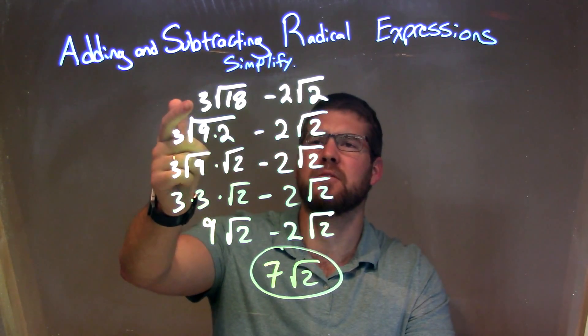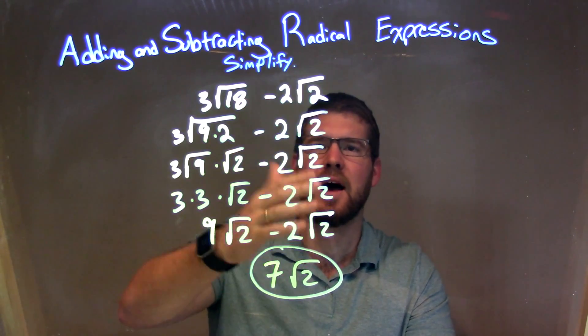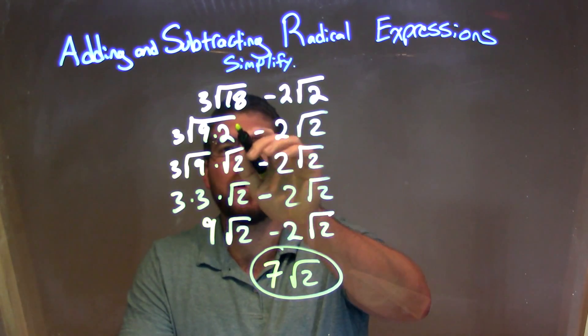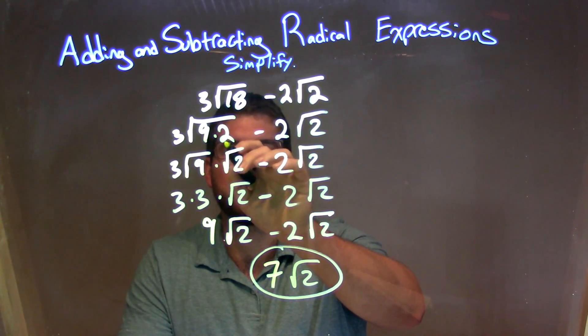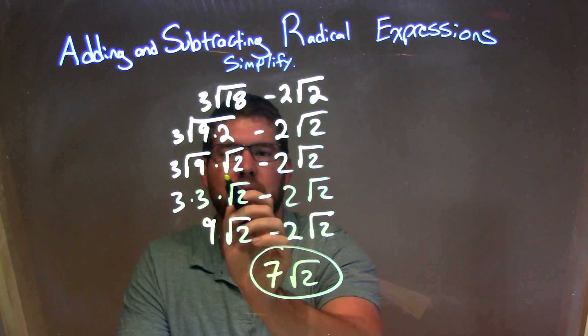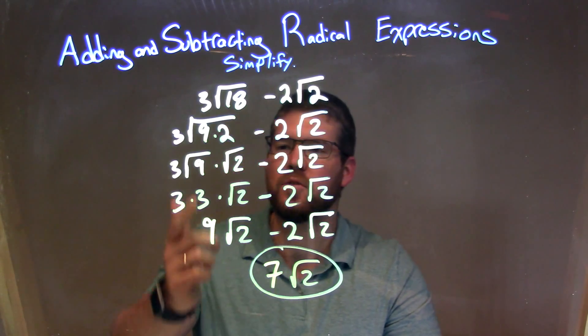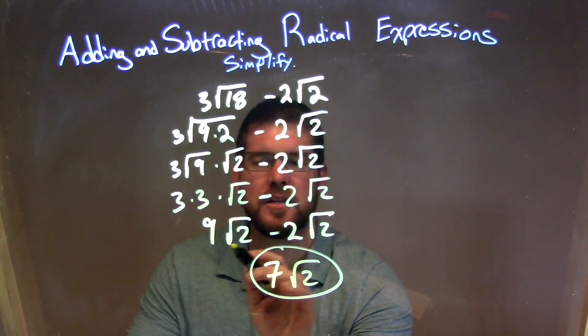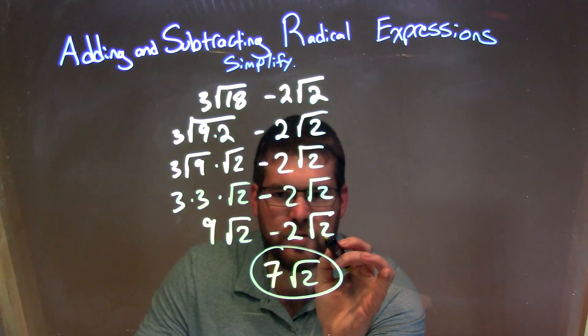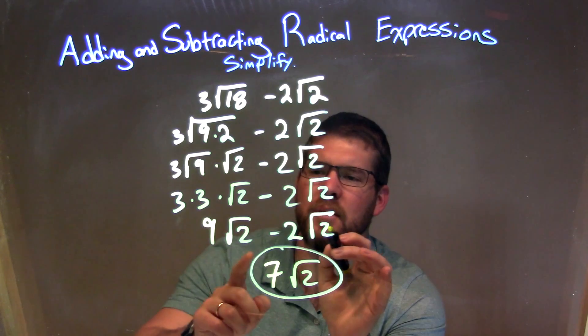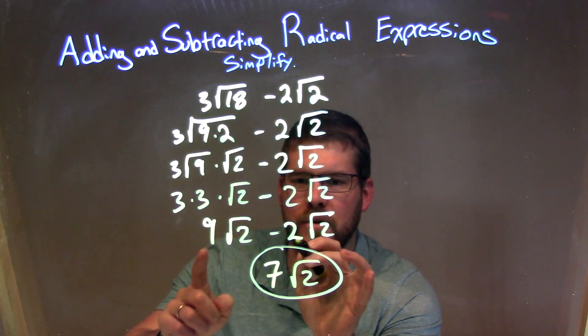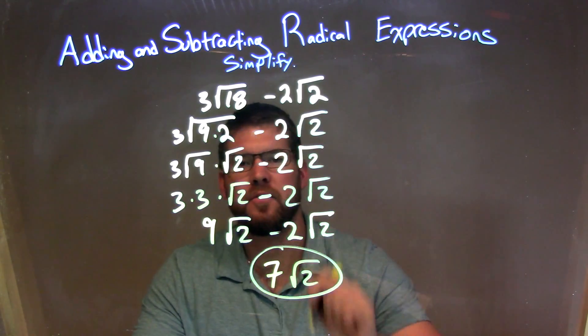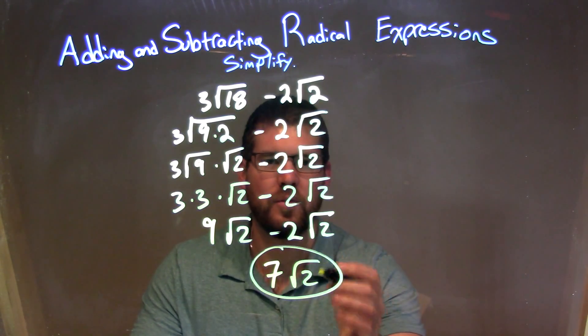So let's recap. We're given 3 square root of 18 minus 2 square root of 2. I can only combine these if I can break them down to be the same square root. So the square root of 18 I break down to be the square root of 9 times 2, and then I can separate that to two different square roots, the square root of 9 and the square root of 2. The square root of 9 simplifies to be 3, and 3 times 3 is just a 9. So now we have 9 square root of 2 minus 2 square root of 2. We can combine these because they both have the same square root there. We look to the number in front. 9 minus 2 is just a 7. We bring down the square root of 2 to get our final answer here of 7 times the square root of 2.